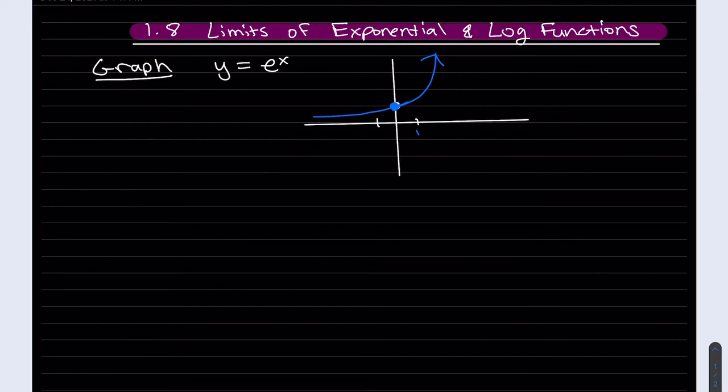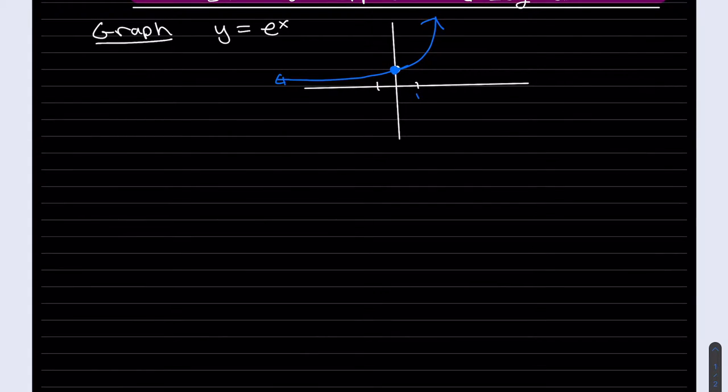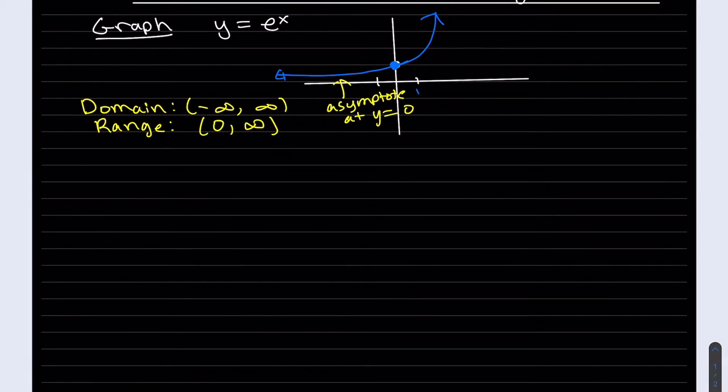And then we can see if we plug in negative numbers, you get fractions, reciprocals, which tend to 0 pretty quickly too. So we can see here. So with this picture, the limits come pretty easy.